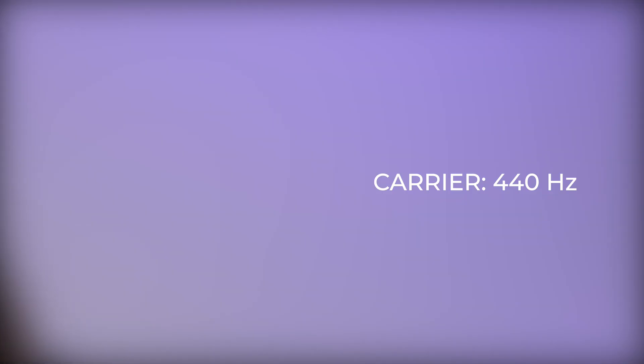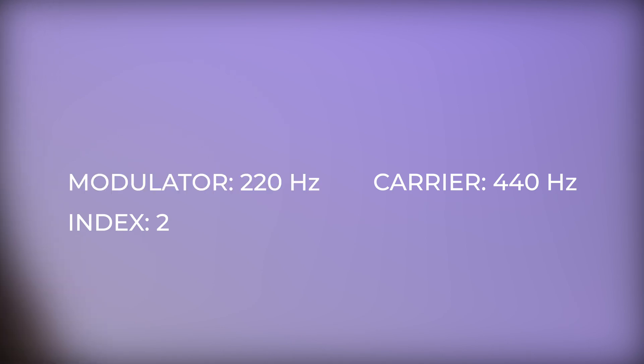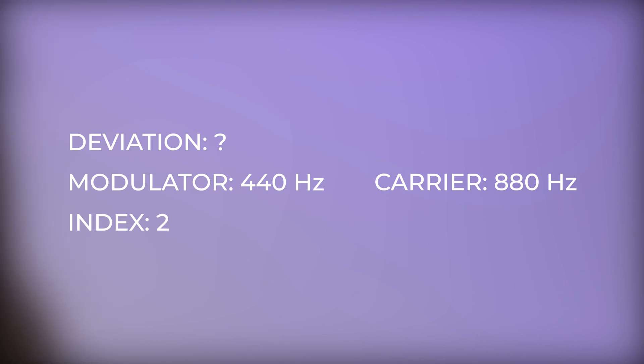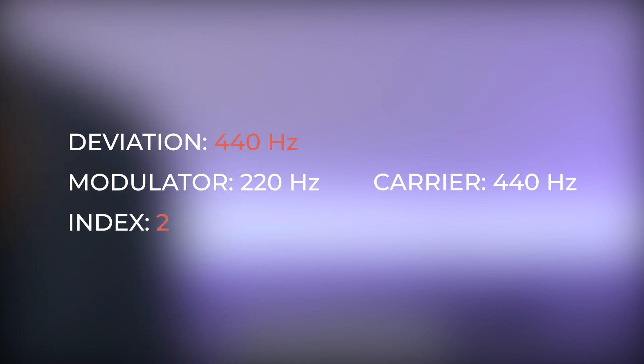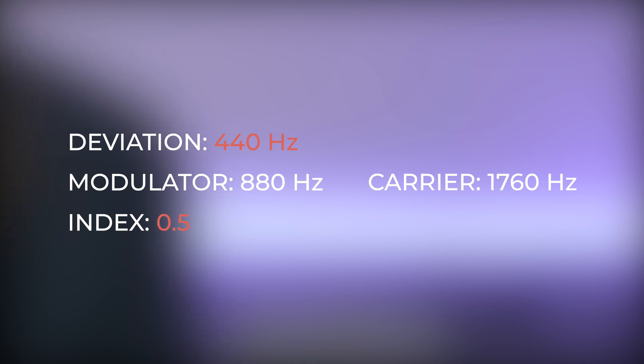With a modulation index of 2 and a modulator frequency of 220 Hz, the deviation would be 440. If we play a note an octave higher and change both the carrier and modulator, the modulator becomes 440 Hz, and with index still at 2, the deviation becomes 880 Hz — twice as before. A consequence of defining modulation amount through the FM index is that the higher we go, the wider the deviation becomes, potentially leading to very sharp, high-frequency-rich sounds. By using the deviation parameter instead, we get a broader modulation in lower notes and a thinner one on higher notes.